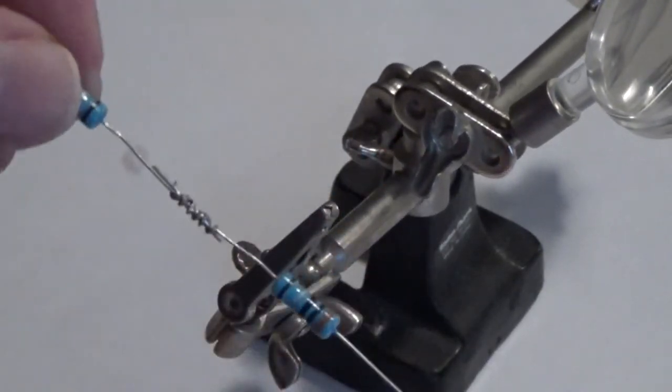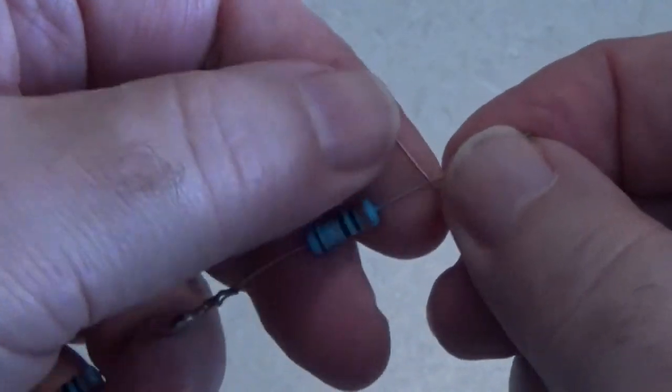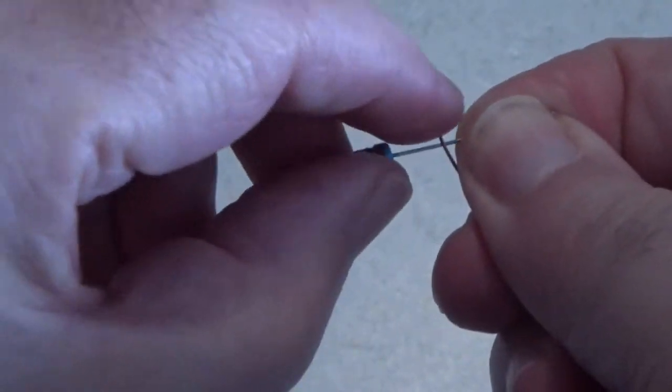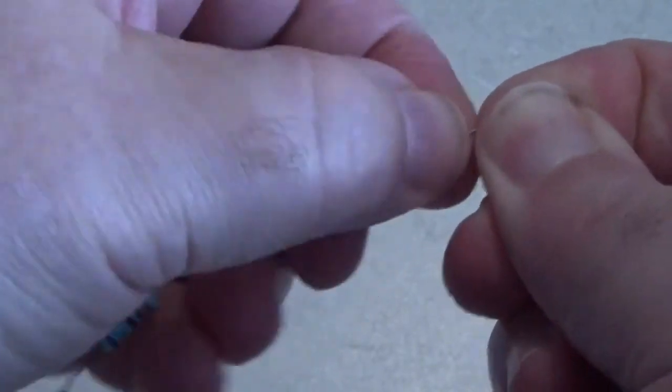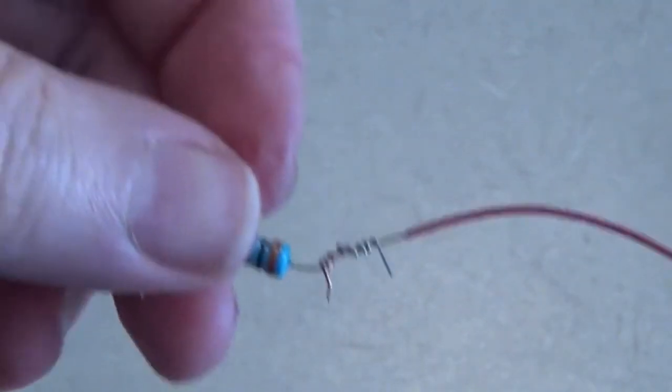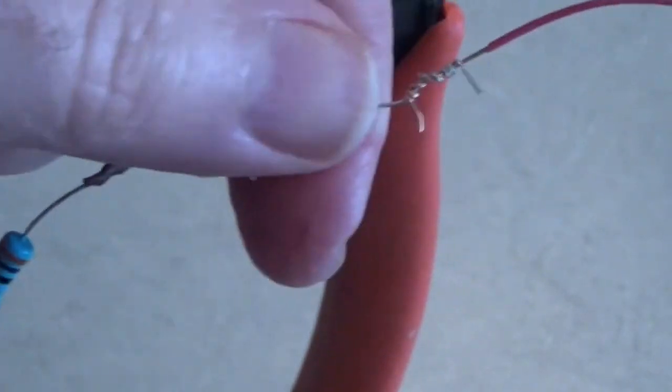After you've done this for all 16 resistors, solder a 3-foot length of your 22-gauge wire to either end of your resistor chain. You can wrap the leads of the wire and the resistor around one another in what's called a Western Union splice. This is a strong mechanical connection, which means you'll get a better electrical connection.